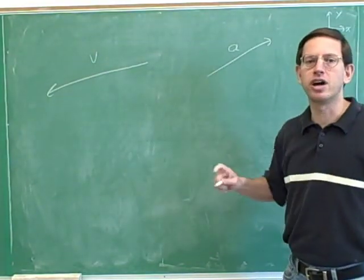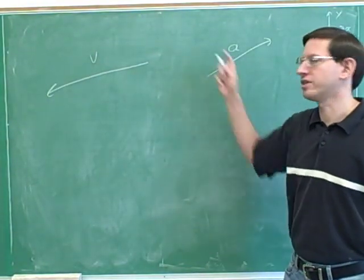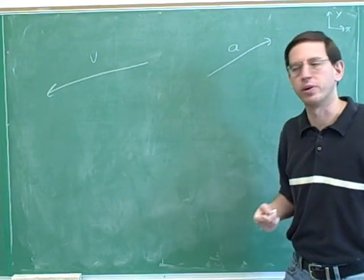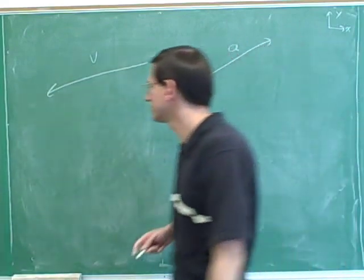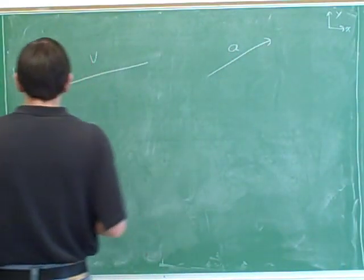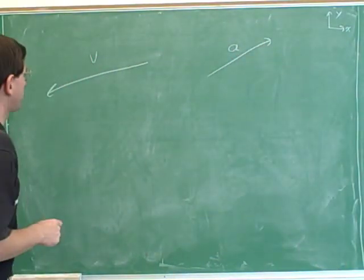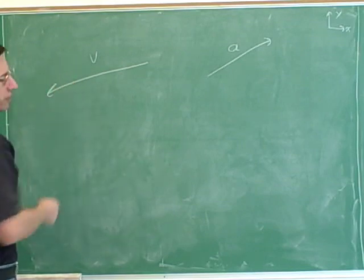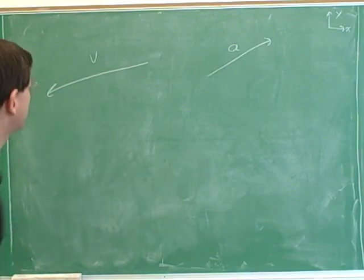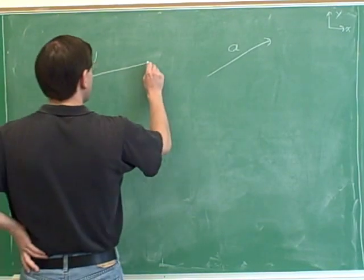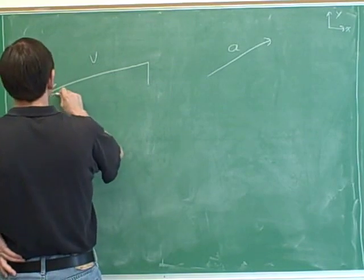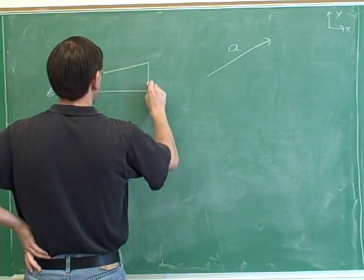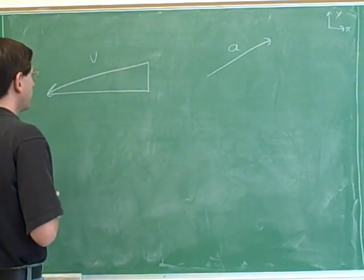We were given the overall vectors, but we're too sophisticated to try to use the overall vectors. We know that we have to break those into components. So let's break this velocity into components by using the overall velocity as our hypotenuse. So here's our right triangle.